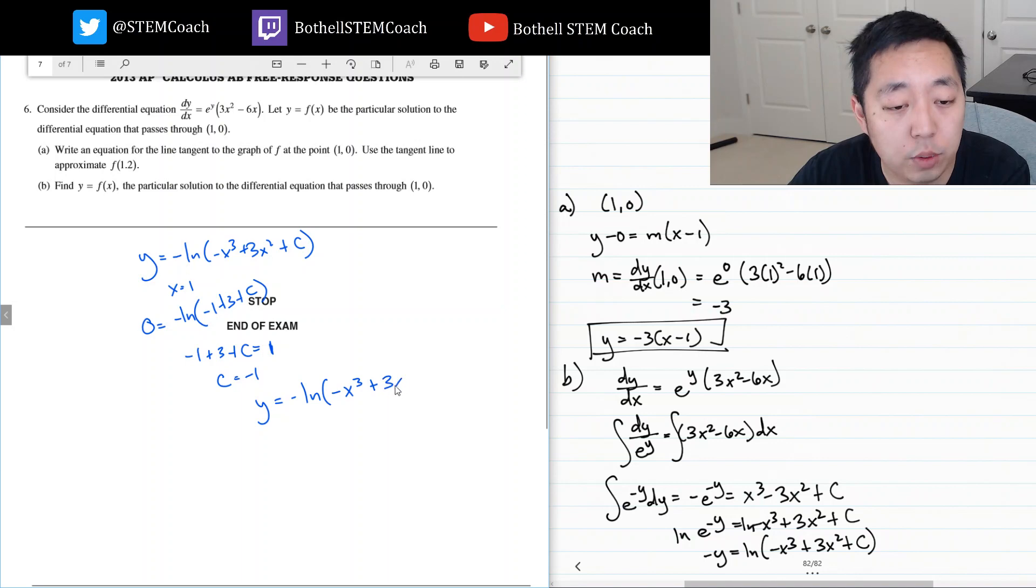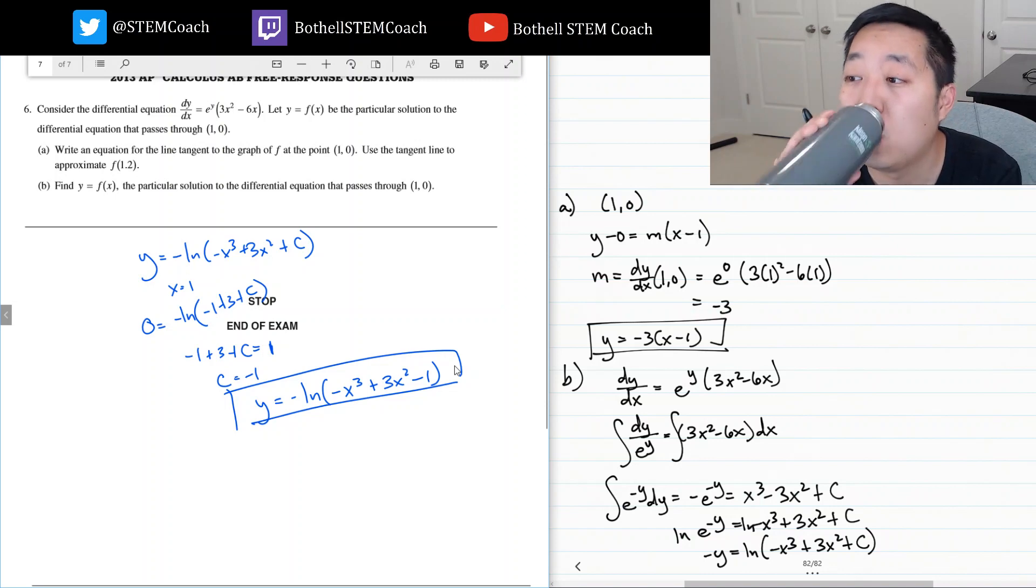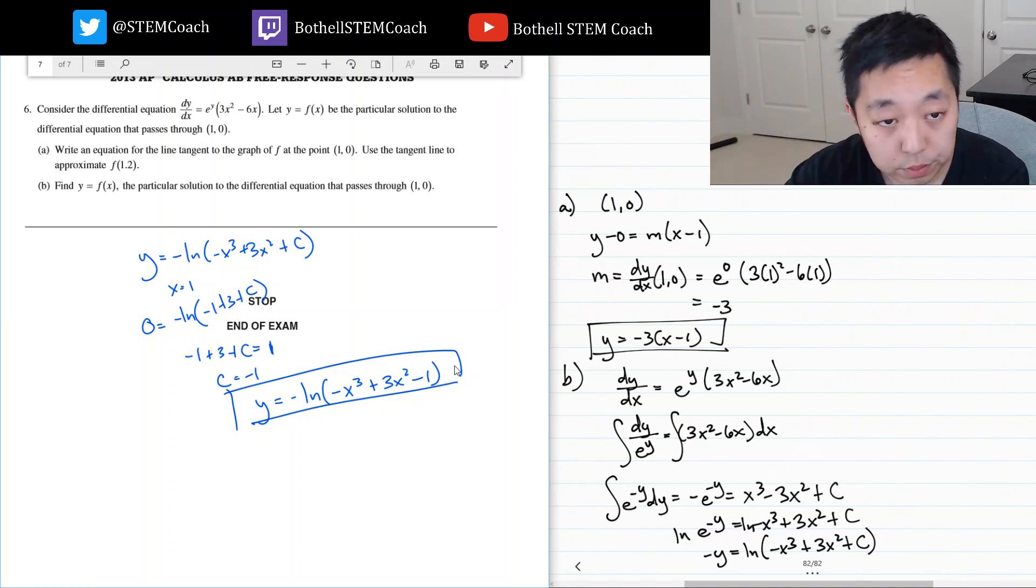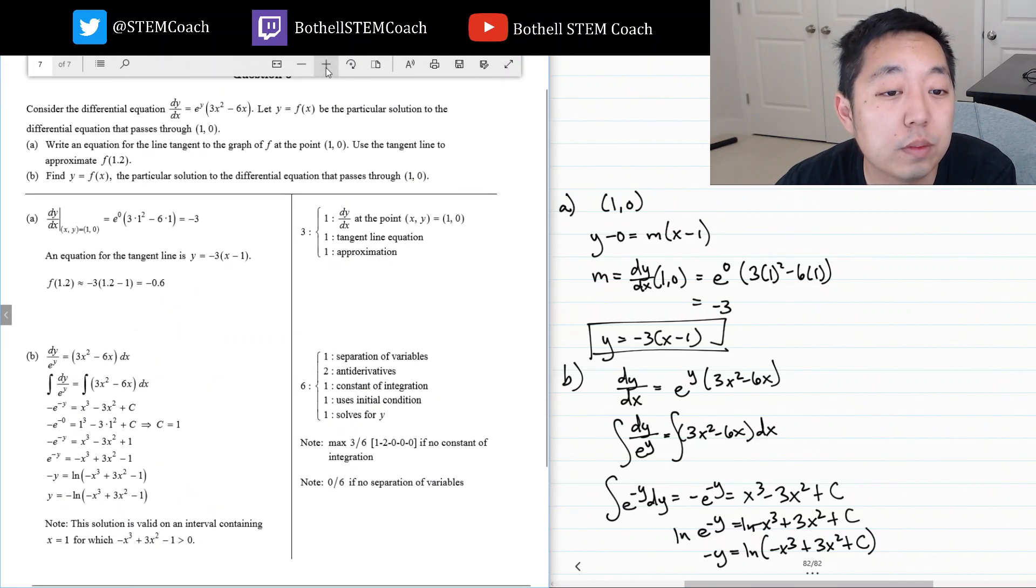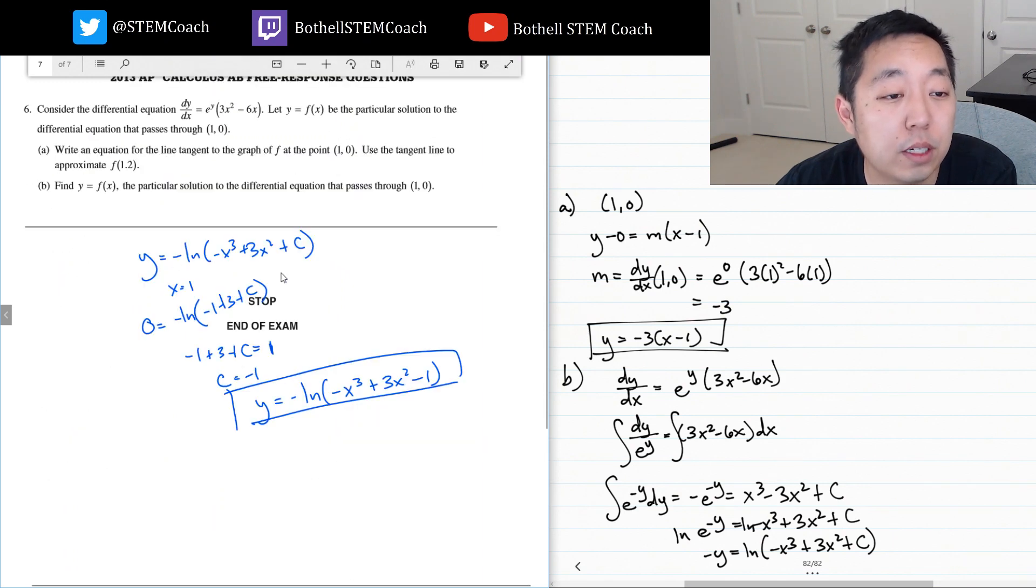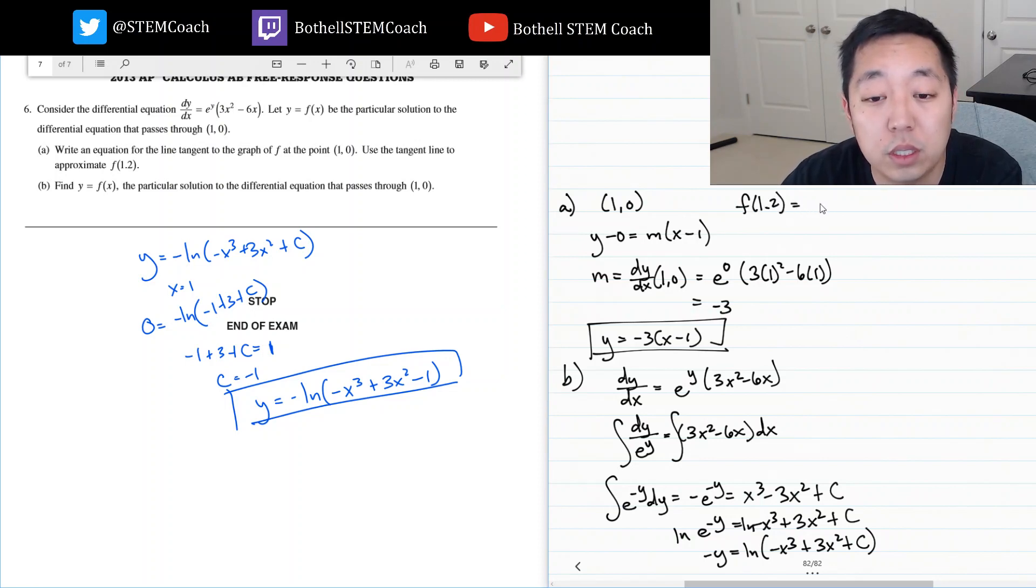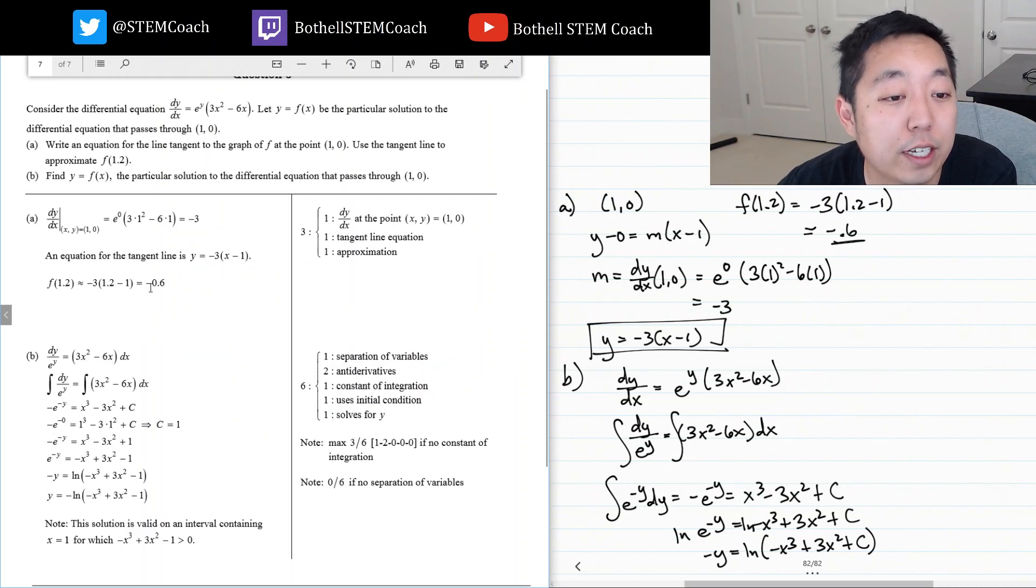So let's see how we did. Oh, I was supposed to estimate something. Oh crap, for part a, f of 1.2. Just plug in 1.2 to here, that's negative 3 times 1.2 minus 1. 0.2 times 3 is negative 0.6. So I forgot to do that. I didn't get those points, but negative 0.6. I got the equation, but if I didn't do the approximation, I would have lost the point there.